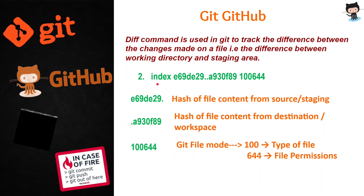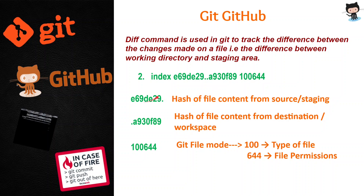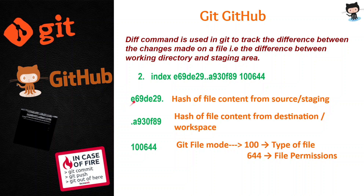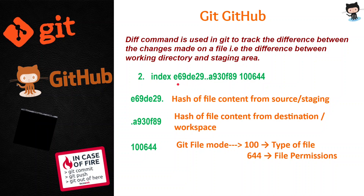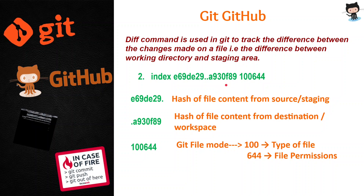The second statement we see is the index number with some hash values. Since the diff command is used to track the difference, there needs to be a source file (staging) and a destination file (working directory). For that, there needs to be some index number or address fetching those files — like in C++, we have pointers that store the address of a variable. Similarly, here we have hash values of file contents. The first hash value stores the file content from the source or staging area, and the second hash value stores the file content from the destination or working directory.